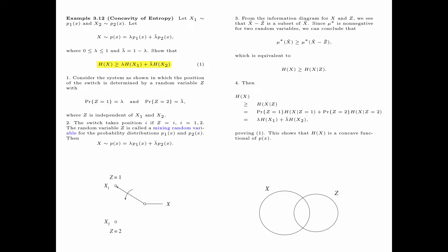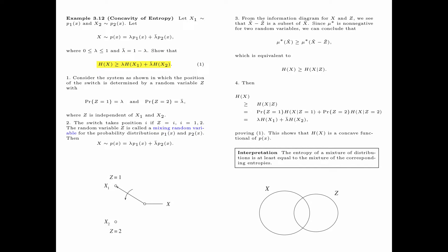This proves the inequality, showing that H(x) is a convex functional of p(x). The interpretation is that the entropy of a mixture of distributions is at least equal to the mixture of the corresponding entropies.